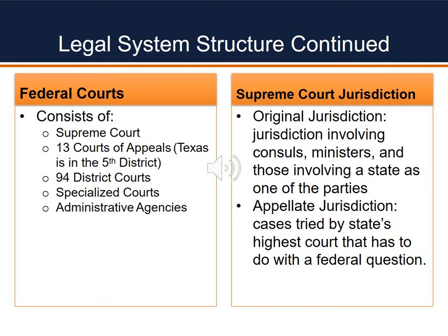Let's talk a little more about our legal system structure. On the left-hand side of our slide we see federal courts. Starting from the bottom, our lower federal courts start with administrative agencies and specialized courts, as well as the district court. If the law or issue makes its way up, it then moves to the Court of Appeals. There are currently 13 Courts of Appeals, and Texas is in the fifth district. If going past the Court of Appeals, we make our way to the Supreme Court. What does the Supreme Court have jurisdiction over? They have original jurisdiction — meaning they have the right to hear cases involving consuls, ministers, and those involving a state as one of the parties. The Supreme Court can also hear cases where there's been appellate jurisdiction, or cases tried by the state's highest court that involve a federal question.